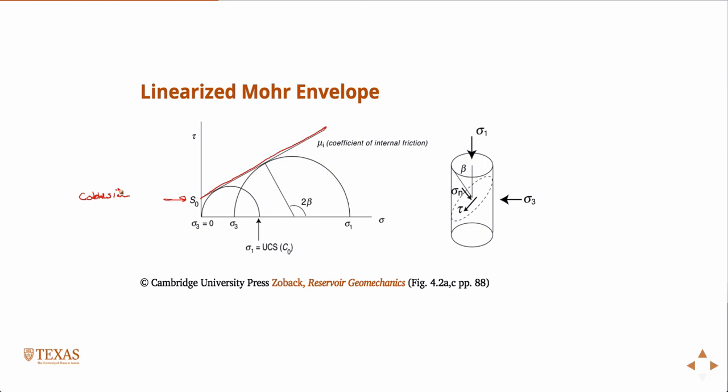When sigma-3 equals zero, this is an unconfined compressive test, and that value is your unconfined compressive strength, which you've done in the lab. The y-intercept is the cohesion, and the slope of the line is called the coefficient of internal friction, and we use the symbol mu-i for that. That forms the equation of the line.